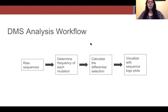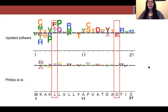My first step was to reanalyze the Phillips 2018 dataset with updated software. To do this, I began with the raw sequence data of viral libraries in each environment. From this, I was able to calculate the frequency of each mutation and then determine the differential selection value. I then visualized the differential selection with sequence logo plots. When I looked at the sequence logo plots, I noticed a lot of overlap between both analyses, but there were also noticeable differences.